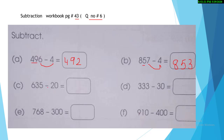So for 635 minus 20, follow my method — mention the places: ones, tens, hundreds. 5 minus 0 equals 5. Think before you write. 3 minus 2 equals 1. Mention the 1, and 6 comes as it is. Don't laugh at my writing — I'm writing with the help of a mouse. Part D you will solve by yourself. I'm not doing it. 3 minus 0 equals 3. Then 3 minus 3 equals 0. And 3 comes as it is.